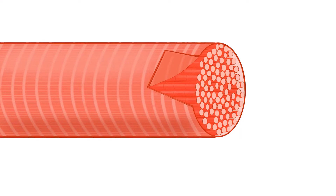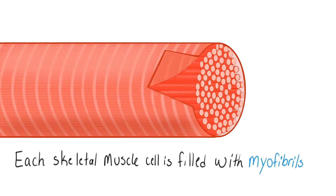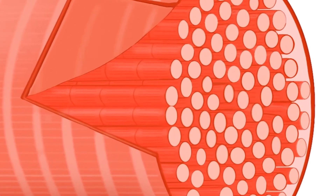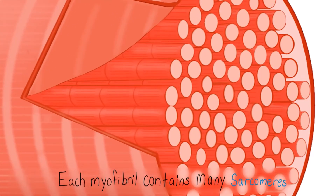Every muscle has many muscle cells, and every muscle cell is filled with myofibrils. Myofibrils are individual rod-like structures, and each myofibril is made of many sarcomeres. The myofibril is like the train, and the sarcomere is like an individual train car — all of those sarcomeres lined up end-to-end make the myofibril.